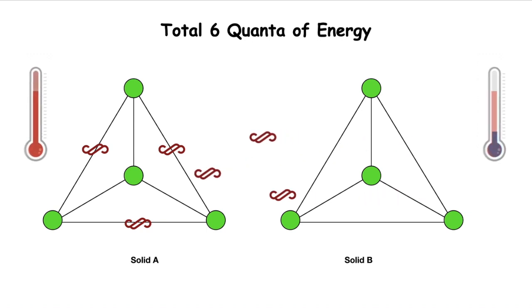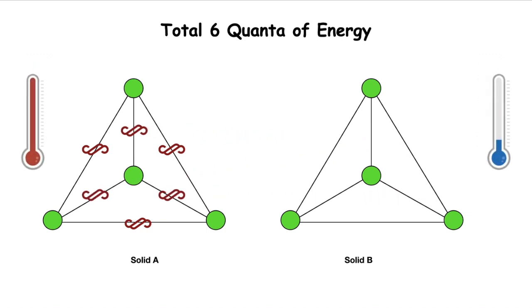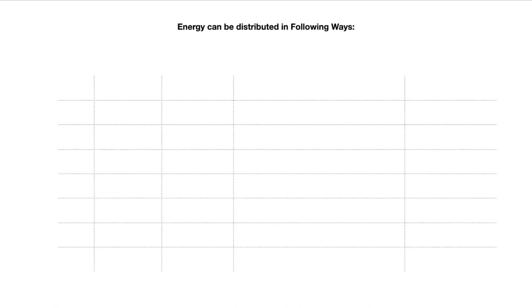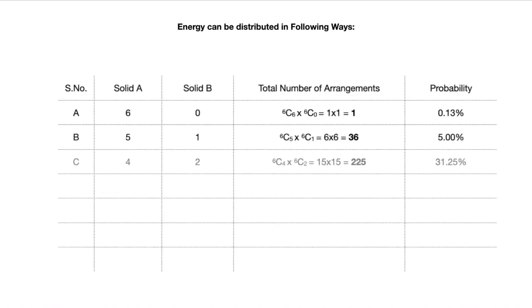There can be different arrangements. We could have all six quanta of energy in solid A and zero in solid B. Now these solids are in contact with each other and can share energy among each other. So the six quanta can be distributed among these two solids in these particular ways.